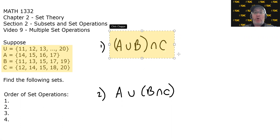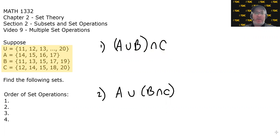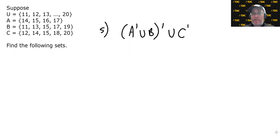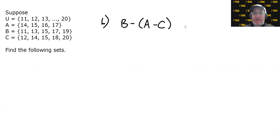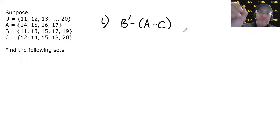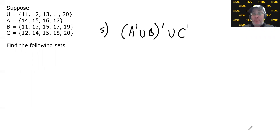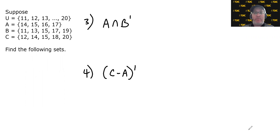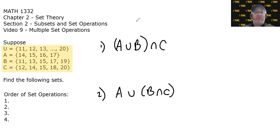Some multiple set operations will be easy to figure out the correct order. For example, this first one — you probably know we go inside the parentheses first. But when you have multiple operations, both binary and unary, with parentheses, you need some guidance on how to approach the problem. So without further ado, I introduce the order of set operations.